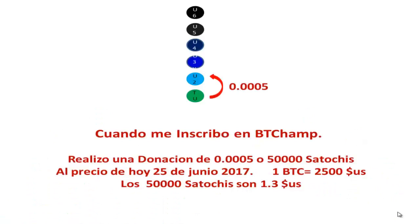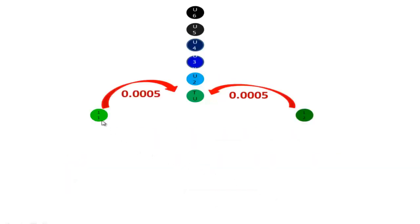Cuando yo me inscribo en BTC Champs, yo realizo una donación a la persona que está encima mío, que se convierte en mi patrocinador. Que no necesariamente es la persona que te está invitando, porque normalmente esta persona ya tiene a sus dos personas inscritas. Entonces, realizo la donación de 0.5, o lo que es lo mismo, 50.000 satoshis, que al precio del 26 de junio — un Bitcoin vale 2.500 dólares — los 50.000 satoshis son 1.3 dólares.